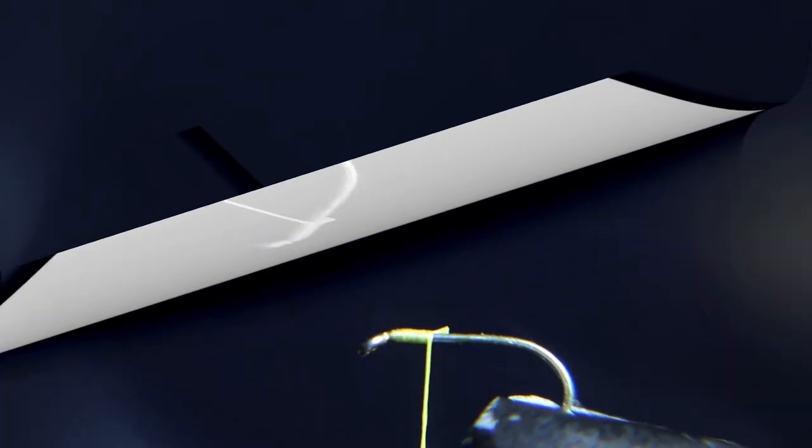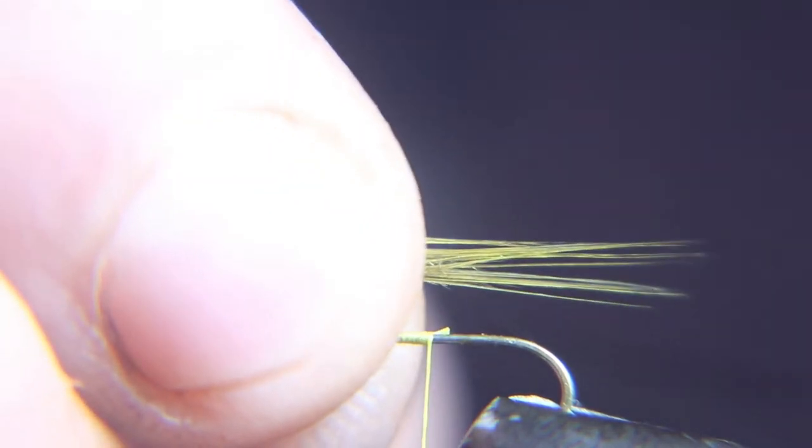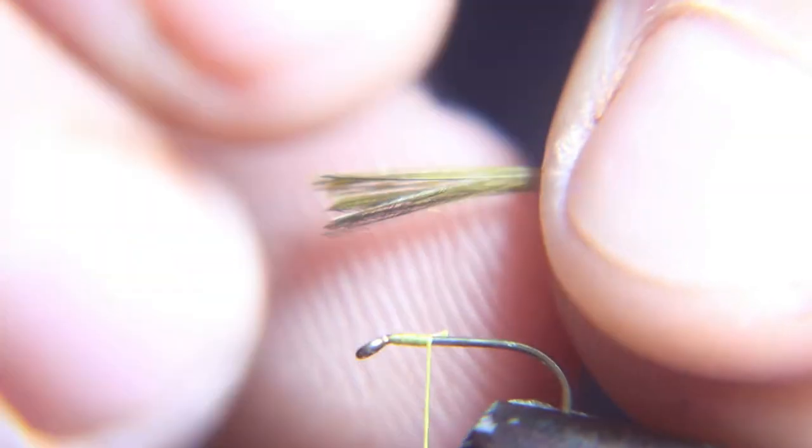Grab some dark olive hackle dry fly hackle and tie that in for a tail. Just a couple because this is a very small hook with 70 denier thread, a small hook. Measure your tail for the length of the shank of the hook to be your tail length and tie your tail in.